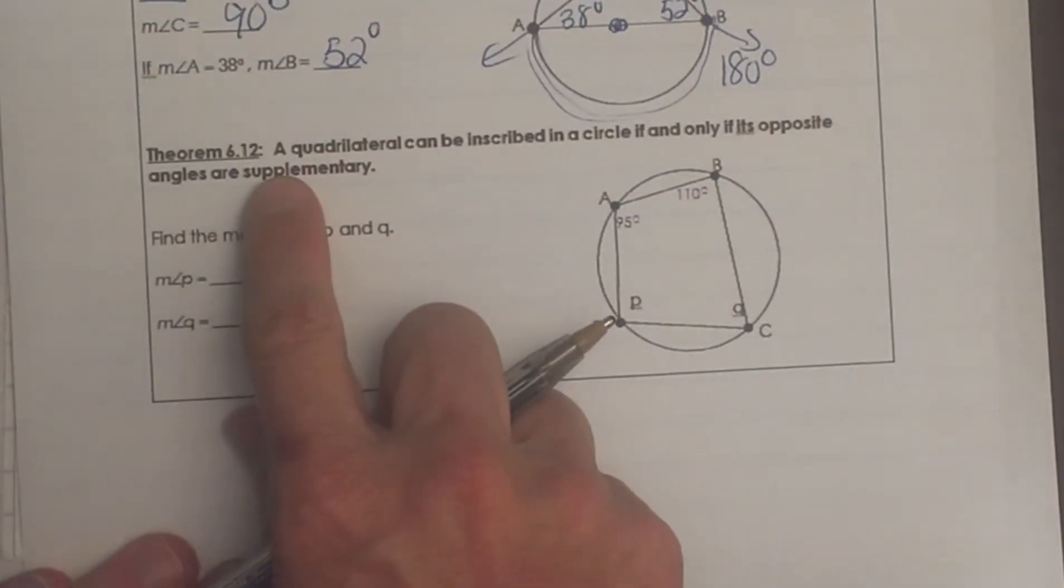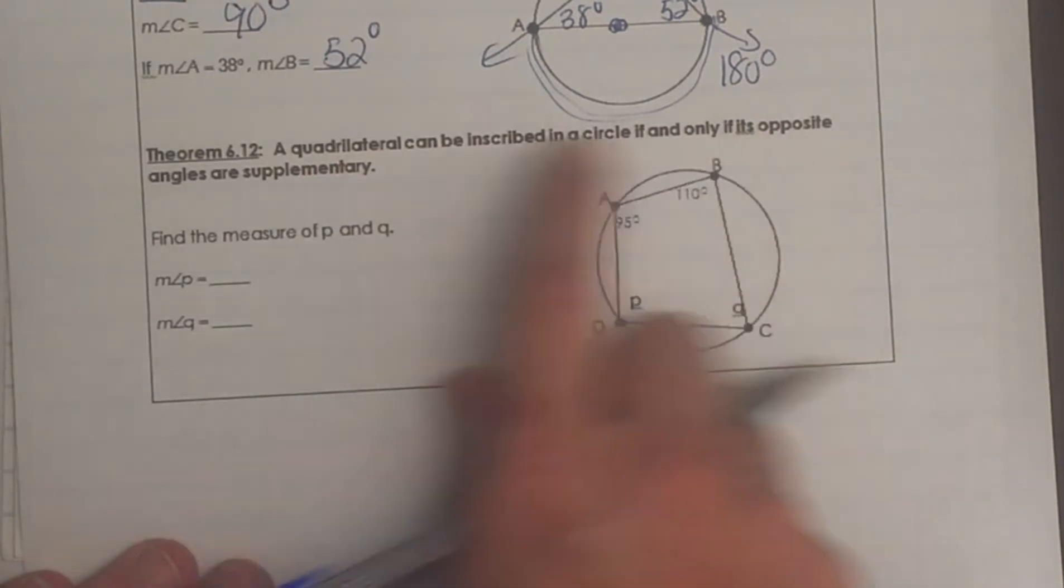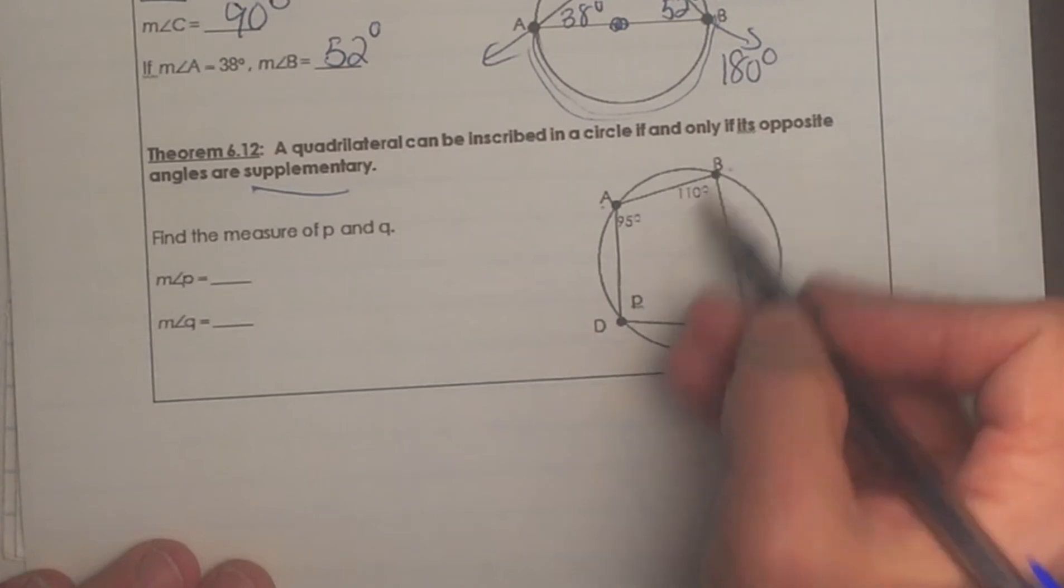Let's look at the last picture here. A quadrilateral can be inscribed in a circle if and only if its opposite angles are supplementary. So let's see what that means. Opposite angles A and C are opposite, B and D are opposite, and supplementary means they must add to 180.